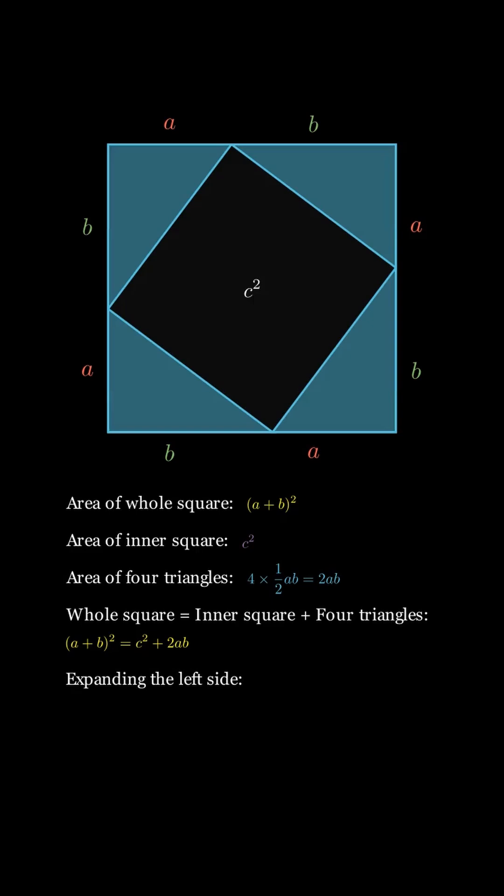If we expand the left side, we get a squared plus 2ab plus b squared equals c squared plus 2ab. Subtracting 2ab from both sides gives us a squared plus b squared equals c squared. And that is how you prove the Pythagorean Theorem.